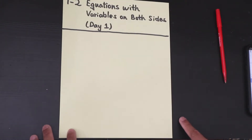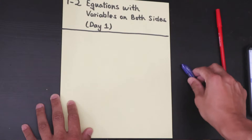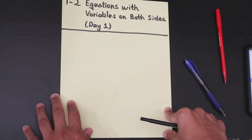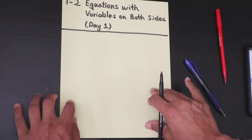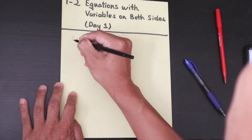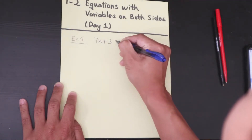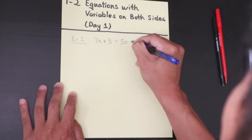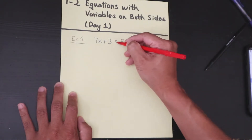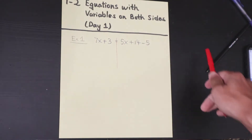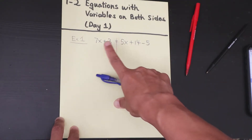Now we're getting into the lesson. The title is 1-2: Equations with Variables on Both Sides — day 1 of 2. It's very similar to equations we've seen, except now you'll see letters on both sides. Example 1: 7x plus 3 equals 5x plus 14 minus 5. First, check for like terms you can combine on either side.